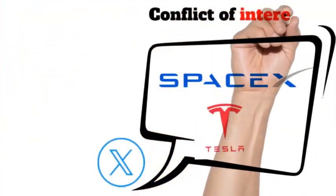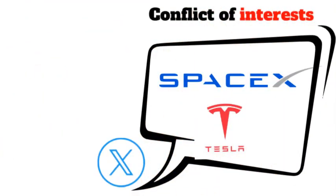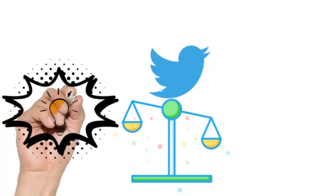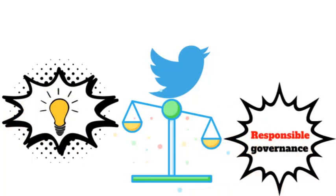There were concerns about potential conflicts of interest, particularly when Musk used the platform to promote his other business ventures, such as Tesla and SpaceX. The debates about Musk's influence over X raised questions about the balance between innovation and responsible governance of a social media platform.